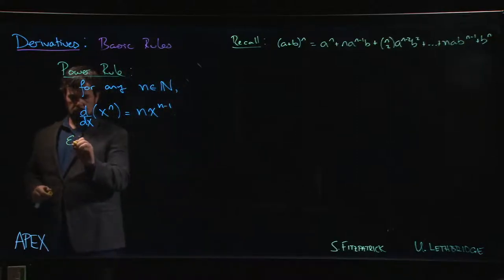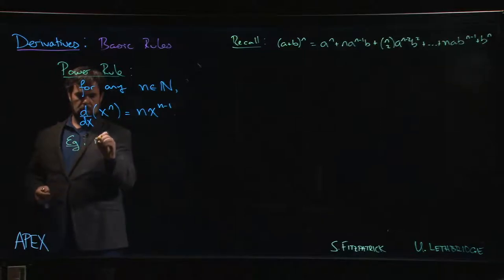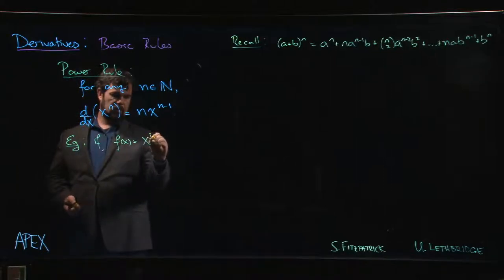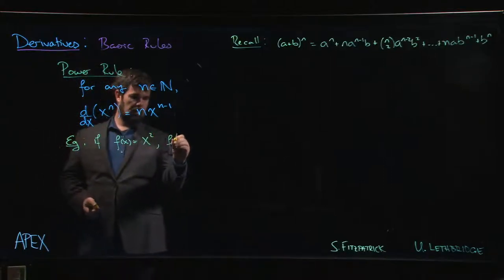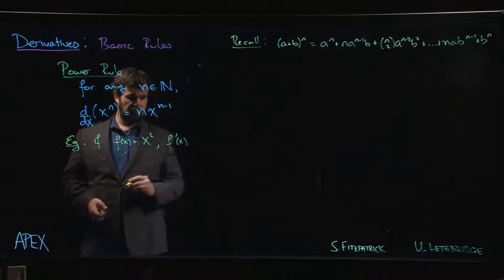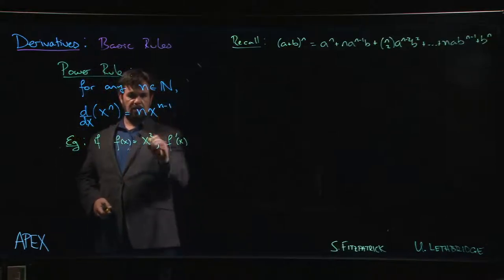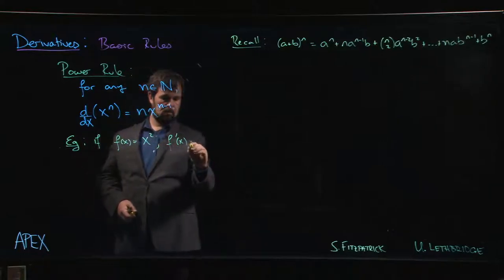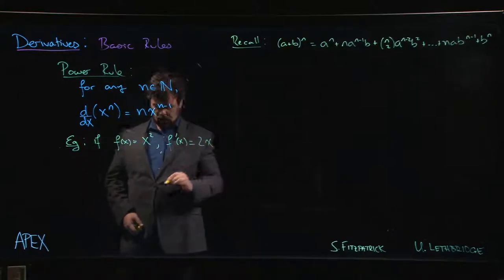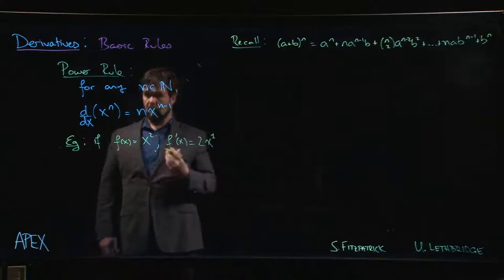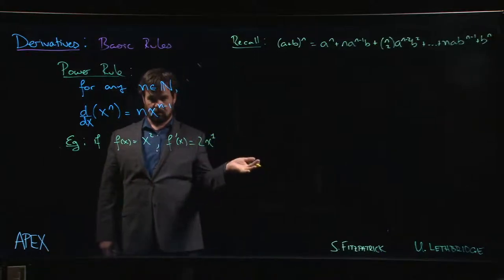So for example, if f of x is equal to x squared, we expect that f prime of x, if we follow this pattern, the exponent n comes down in front. So the 2 comes down times x to the 2 minus 1, x to the 1, which is simply 2x, just as we saw before.